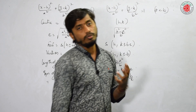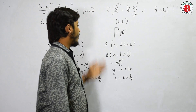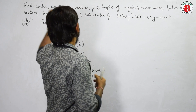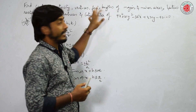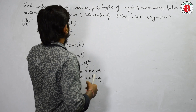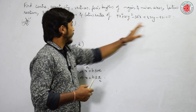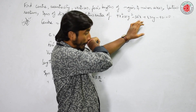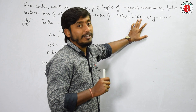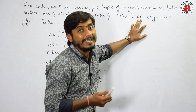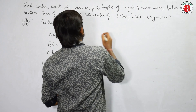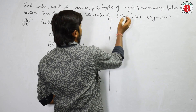With this foundation, let us do one problem — how to find all parameters when a non-standard equation is given. The question asks us to find center, eccentricity, vertices, focus, lengths of major axis, minor axis, latus rectum, equation of directrices, and equation of latus rectum. First, we have to convert this equation into standard form using the completing the square method.